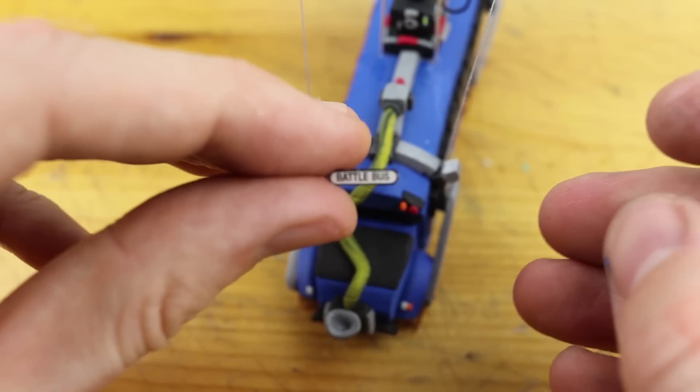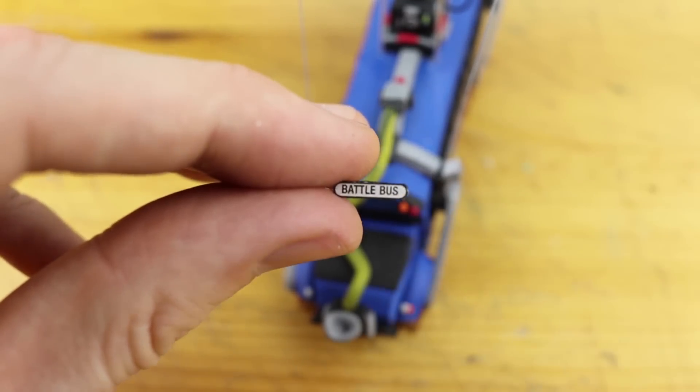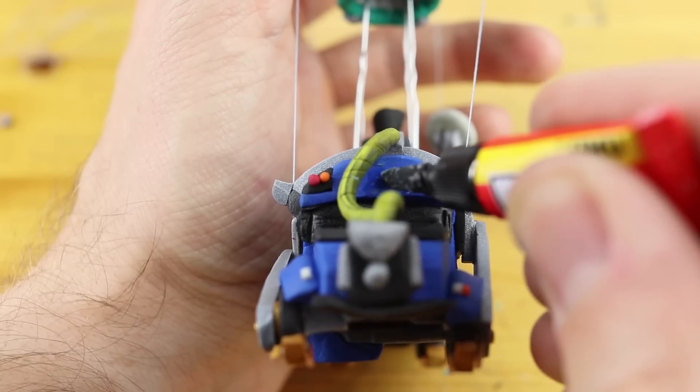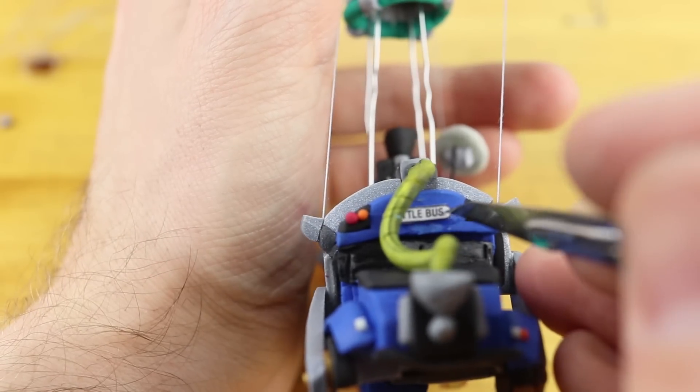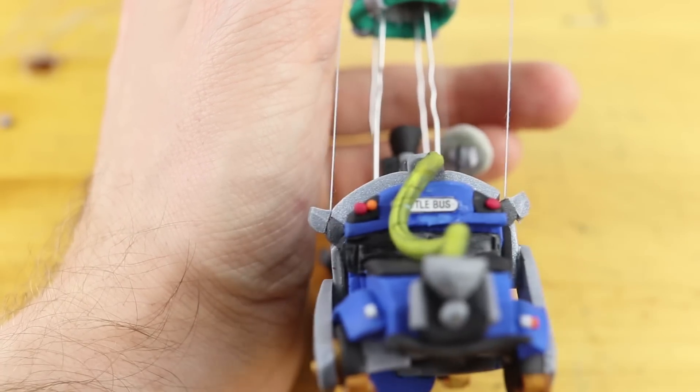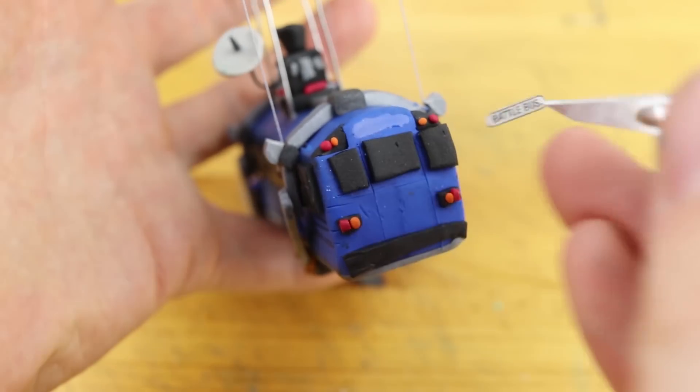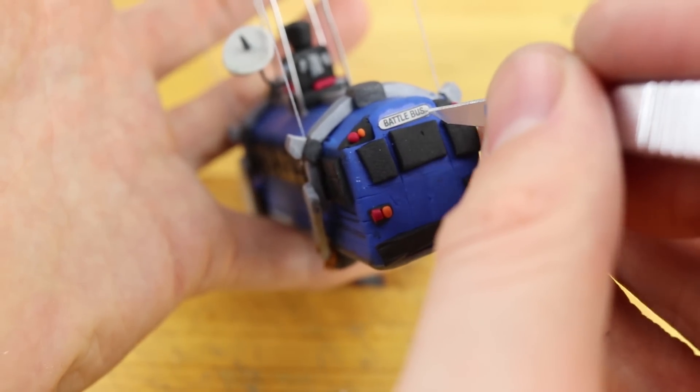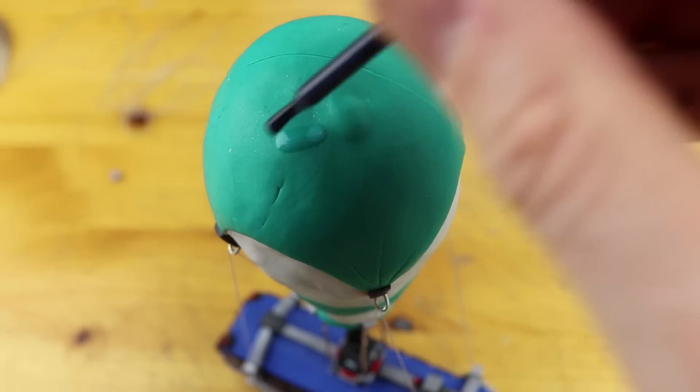and also this tiny sign which says battle bus and we need this piece of paper two times. One for the front of the bus right between the lights and also one sign for the back side of the bus also between the lights as well.